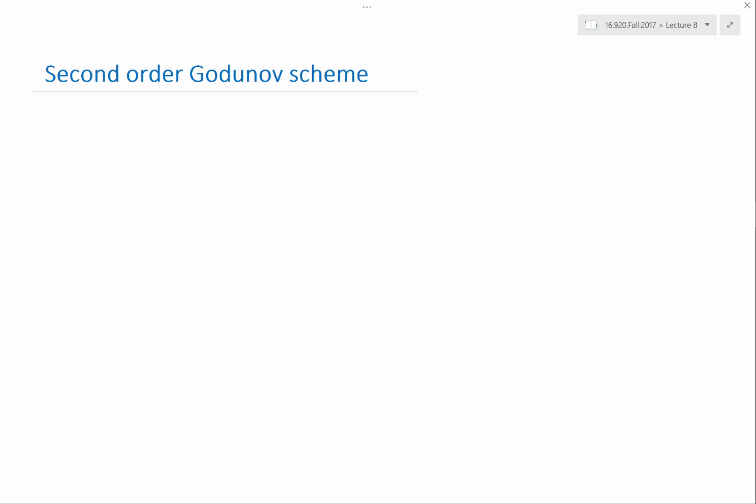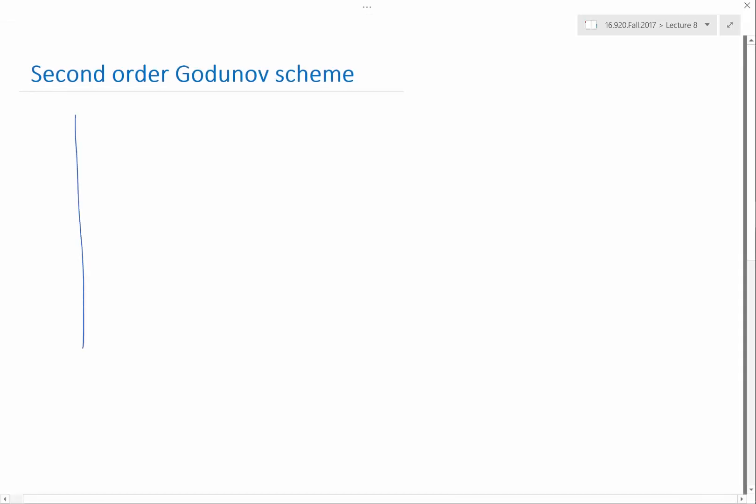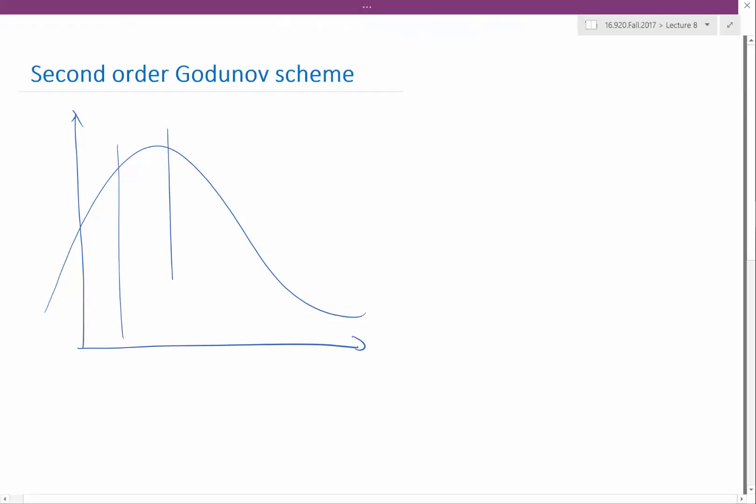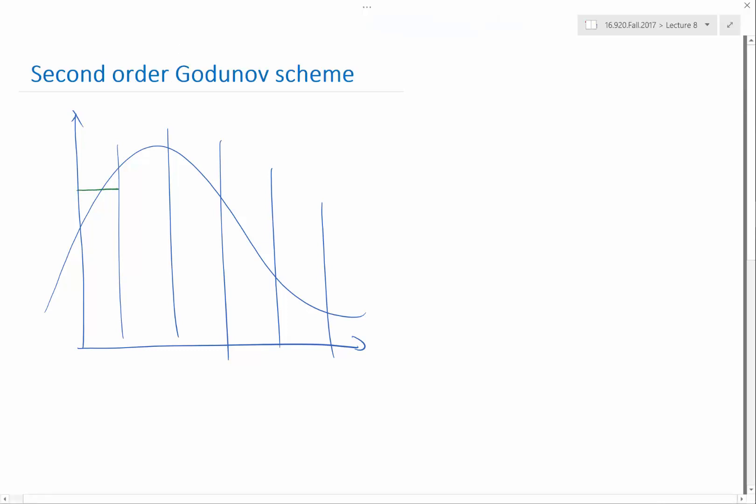How can we use the Godunov scheme to produce a non-oscillatory solution near shockwaves but also second order? The way is to not modify the Godunov scheme at all, but instead modify how we treat the function from its volume averages. We have been treating a function as if it is a piecewise constant function.